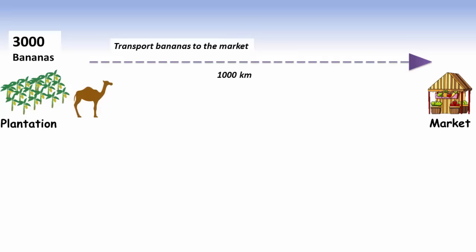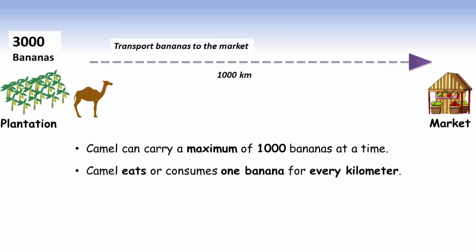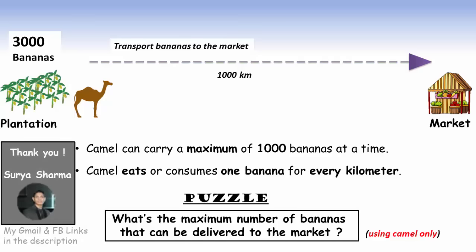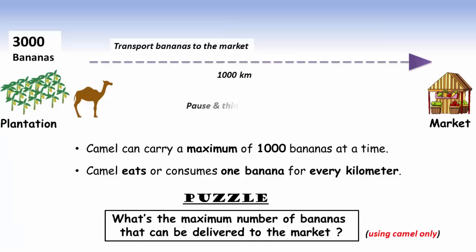Your camel is used for banana transportation but it can carry a maximum of 1000 bananas at a time and it eats one banana for every kilometer it travels. What's the maximum number of bananas that can be delivered to the market with the help of the camel? I'd like to thank Surya for sharing this amazing puzzle. I would highly encourage you to pause the video and think logically.